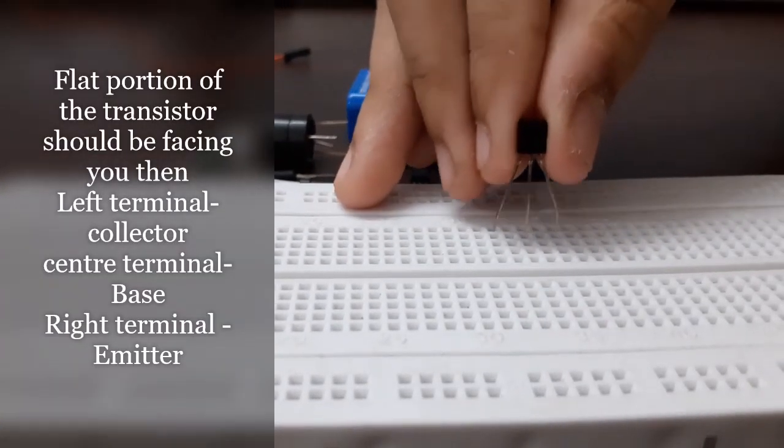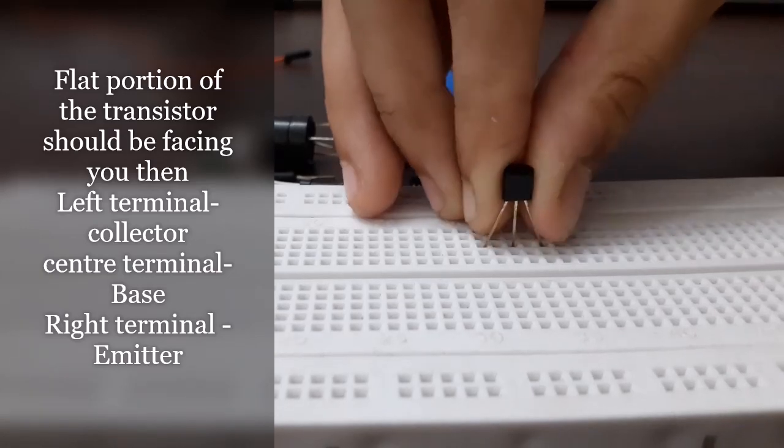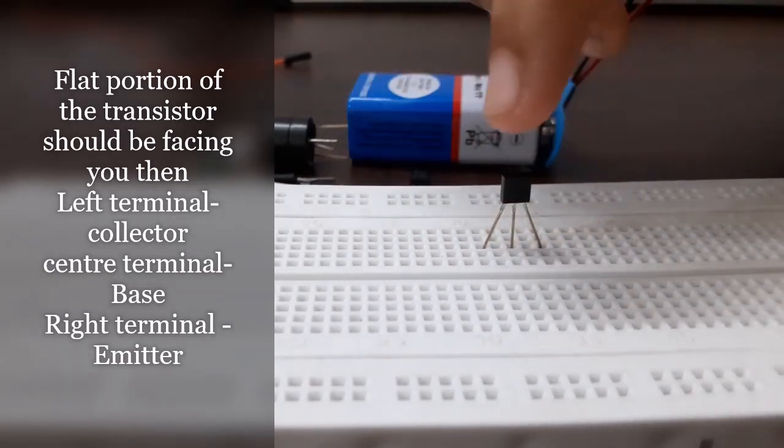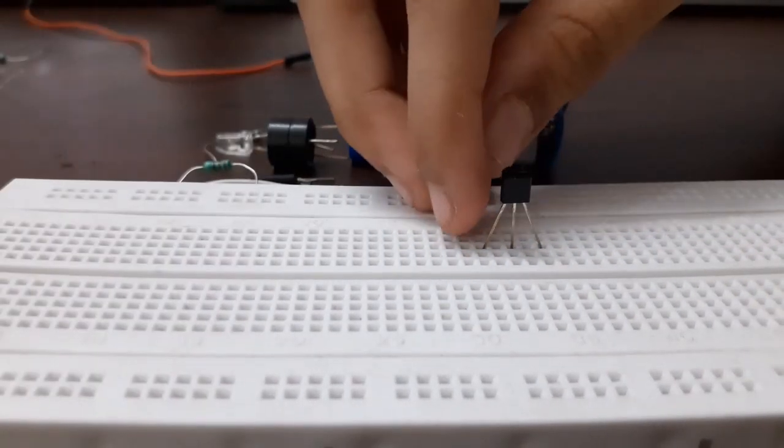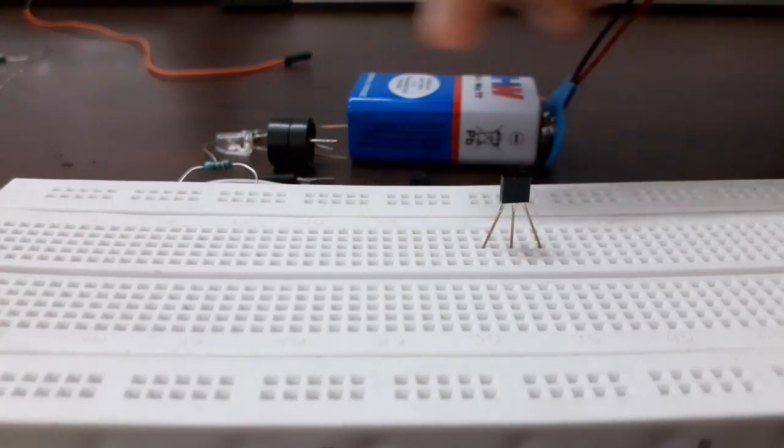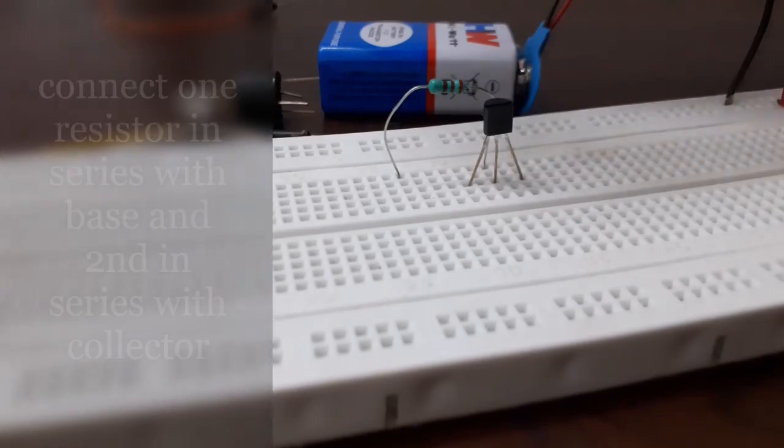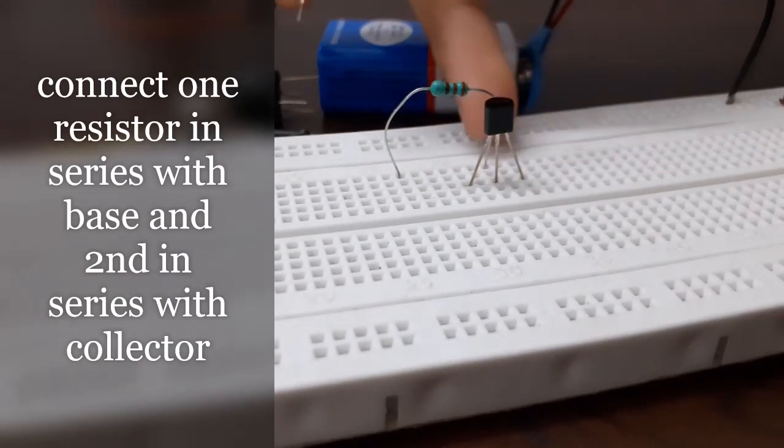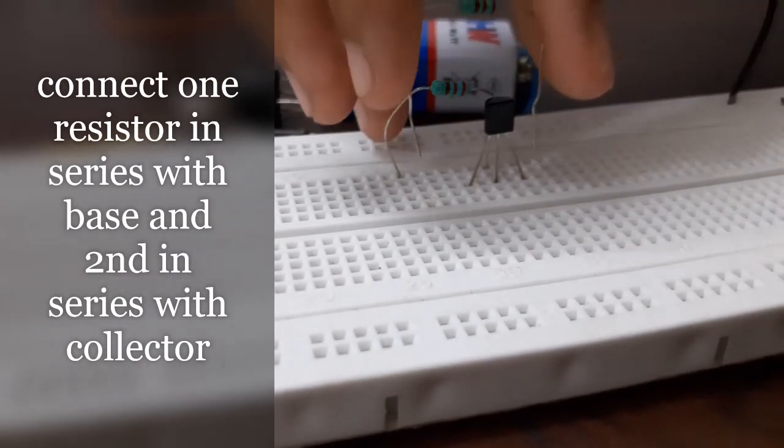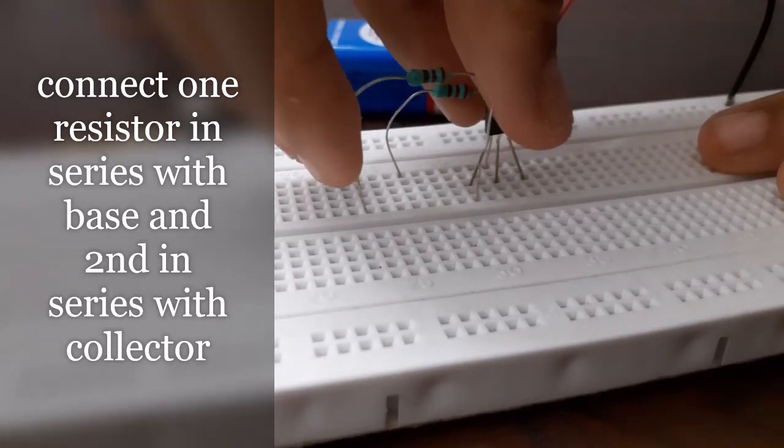Now place the transistor in such a way that the flat portion faces you. Then to your left side will be the collector and to the right side will be the emitter. Now connect the first resistor to the base node and the second resistor to the collector node.